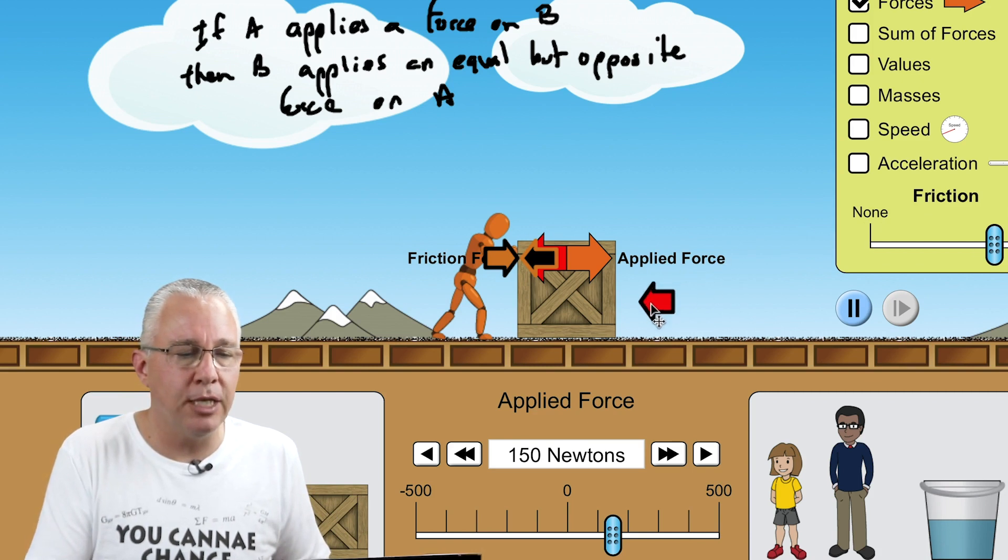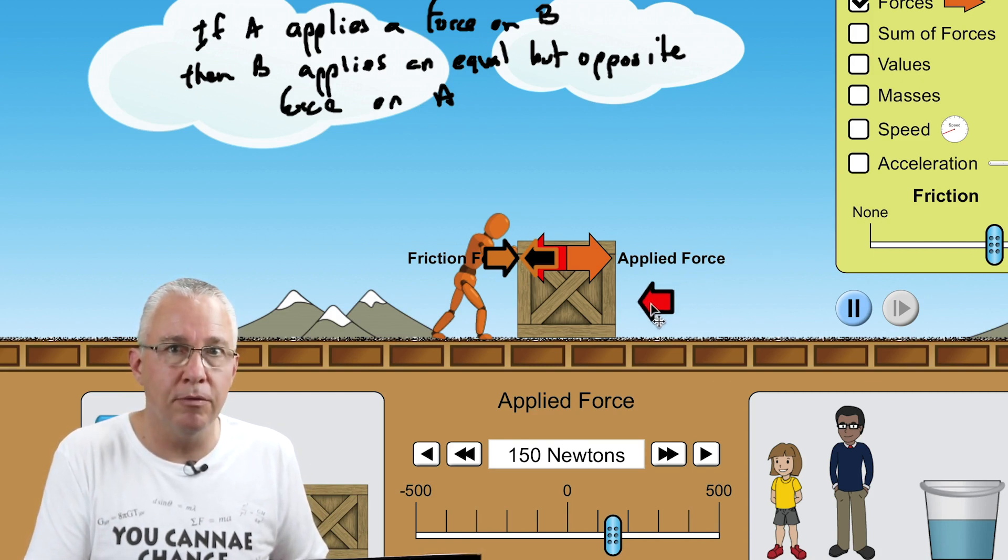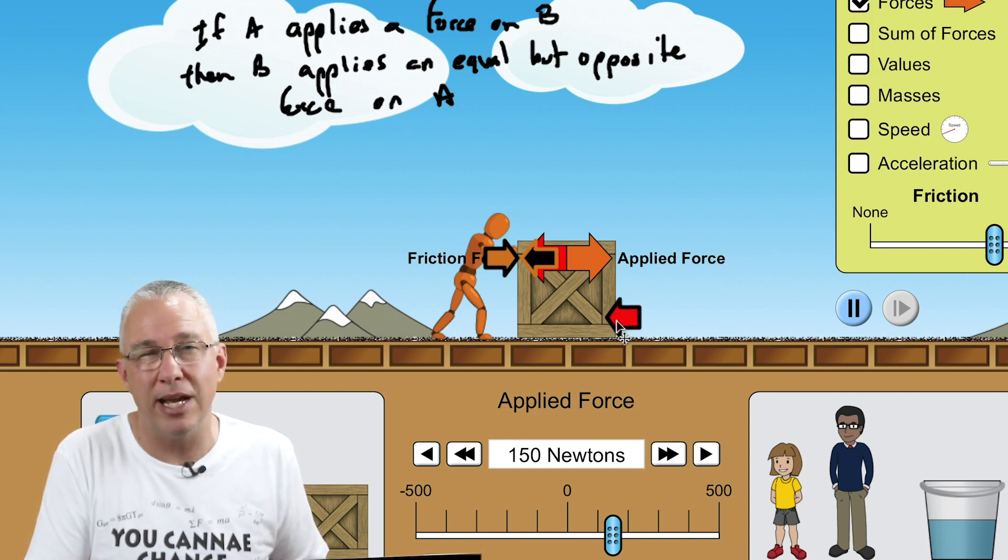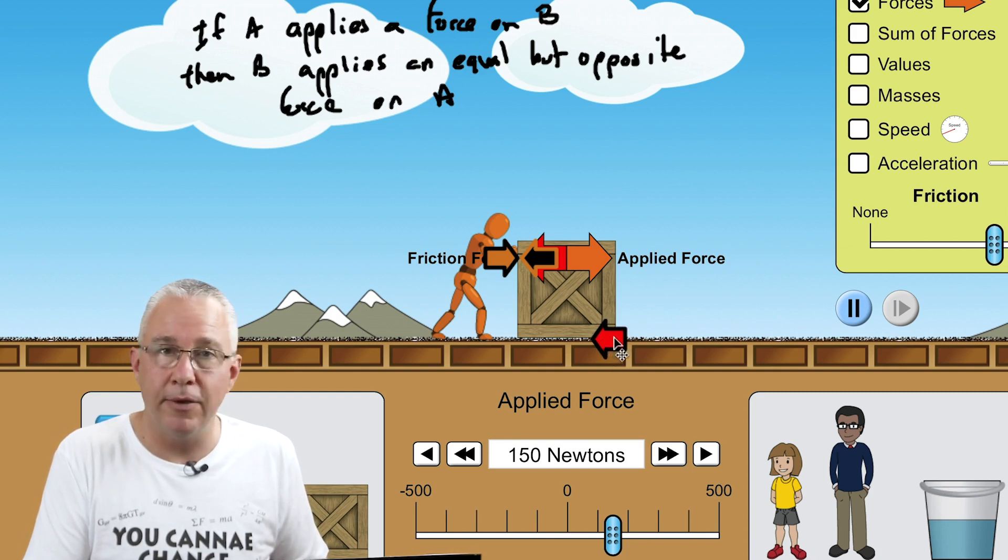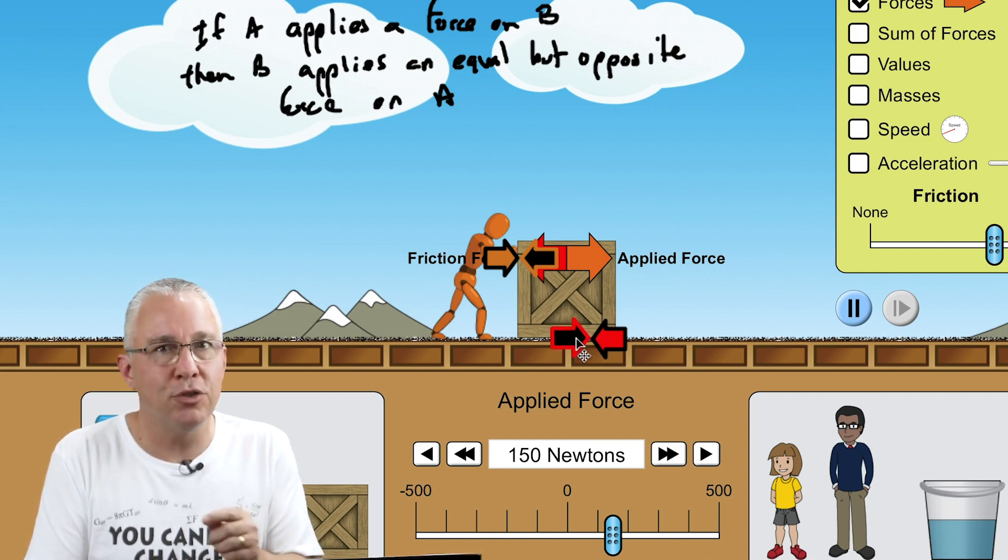Then of course we have this force here which is the force of friction on the box, which is really the force of the ground on the box. Similarly speaking, we have an equal and opposite force in the opposite direction. Now this is the force of the box on the ground.